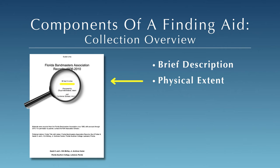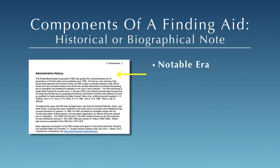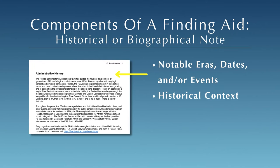The historical or biographical note summarizes the background history of the individual, family, or organization who created the collection. You'll find notable eras, dates, and events in the life of the organization or individual described in this section. This essential information places the collection in the context of its creation and is often necessary to understand the documents contained within the collection.